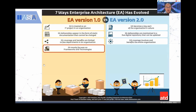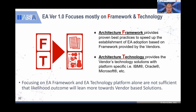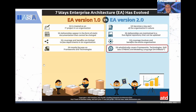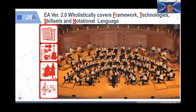The fourth difference: EA 1.0 typically focused only on framework and technology, but the framework and technology were typically connected to whatever information came from a particular vendor. It had depth but lacked breadth. In EA 2.0, EA couples holistically between framework, technology, skill set, and notation — they expanded to include skills and a notational language. The analogy I use is this orchestra: when you want to play in an orchestra, you need a conductor, you need people with the right skill set, the right instruments, and they all read the same musical notes.